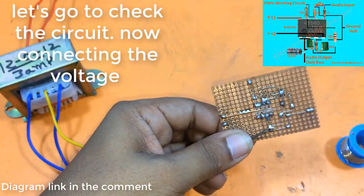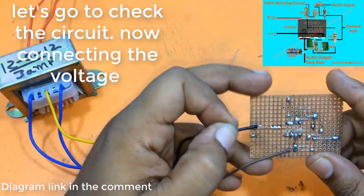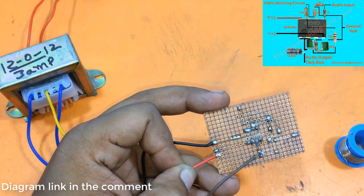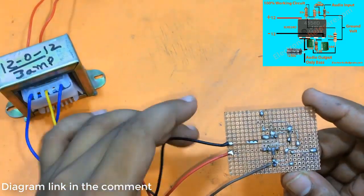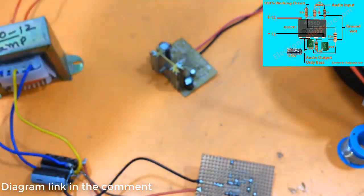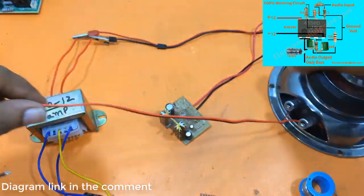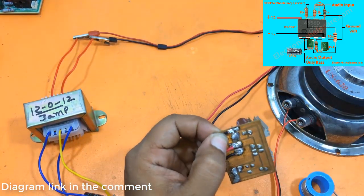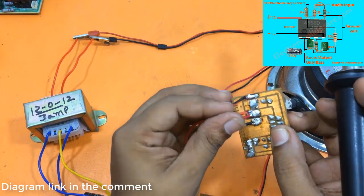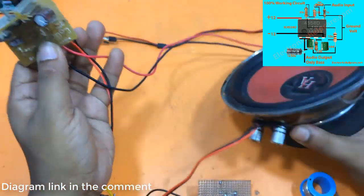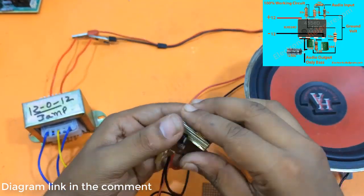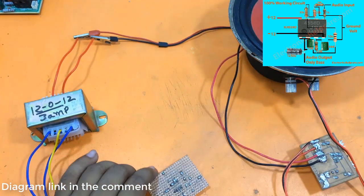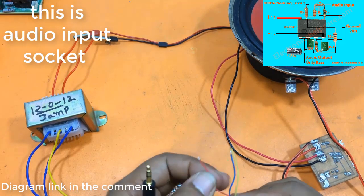Let's go to check the circuit. Now connecting the voltage. This is a mini 2003 amplifier circuit. This is audio input socket.